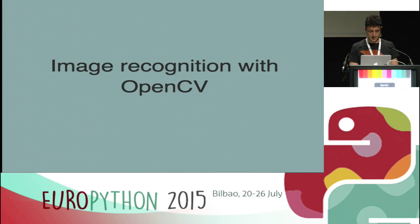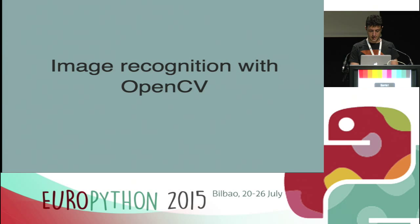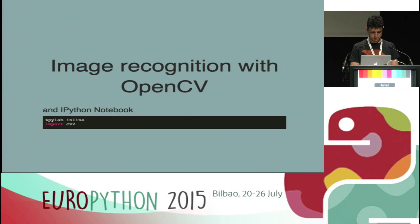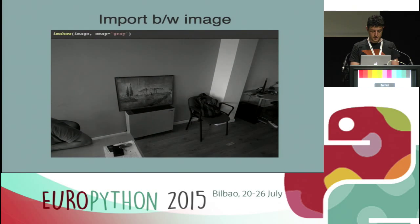OpenCV has various image recognition algorithms already implemented, and it has a Python binding. Let's see an example using the SIFT algorithm — Scale-Invariant Feature Transform — in an IPython notebook. First of all, we import the image in black and white. Indeed, the image recognition algorithms are color-independent.